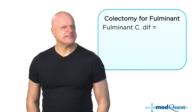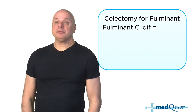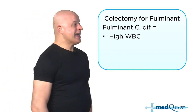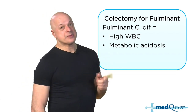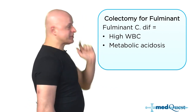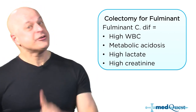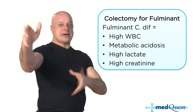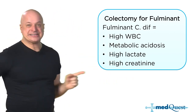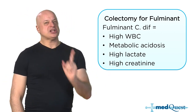Defining severe C. diff is not about the number of bowel movements. It means systemic infection — elevated white blood cell count, metabolic acidosis from systemic infection, and high lactate. Fulminant colitis is when it's gone beyond colitis: systemic white count elevation, metabolic acidosis, decreased perfusion, not perfusing your kidneys. It's colitis that has ripped into your bloodstream, and you do a colectomy.